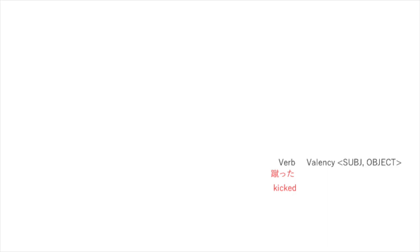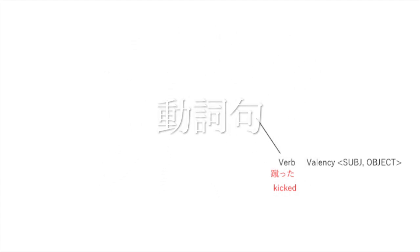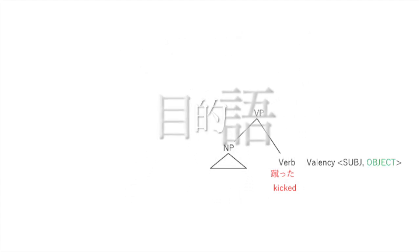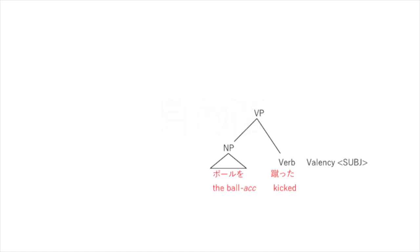Now we're going to combine the verb with its object to give ourselves a verb phrase, VP. The object in this case is a noun phrase: boru o. That's accusative case — the ball. Now the object has disappeared from the valency list.